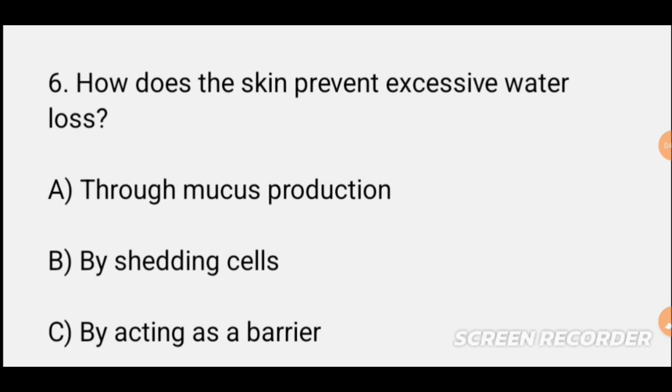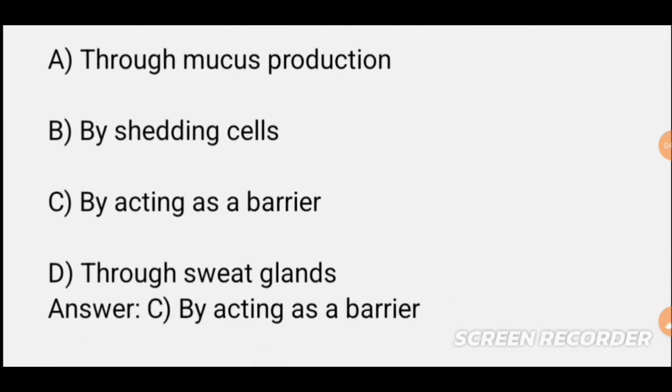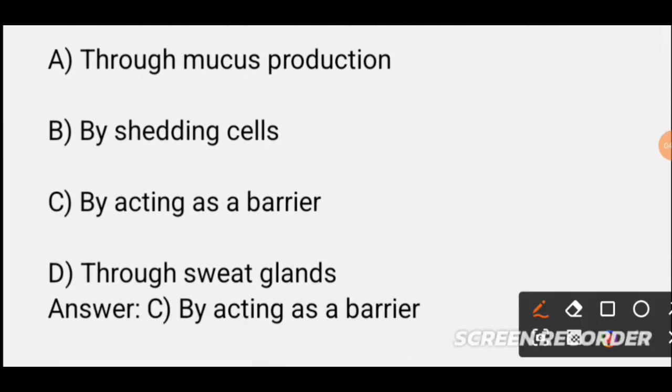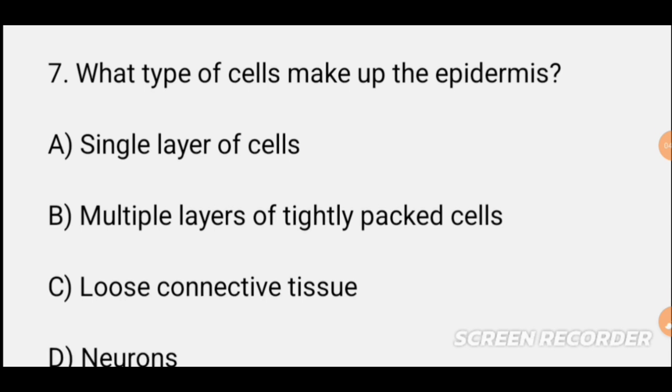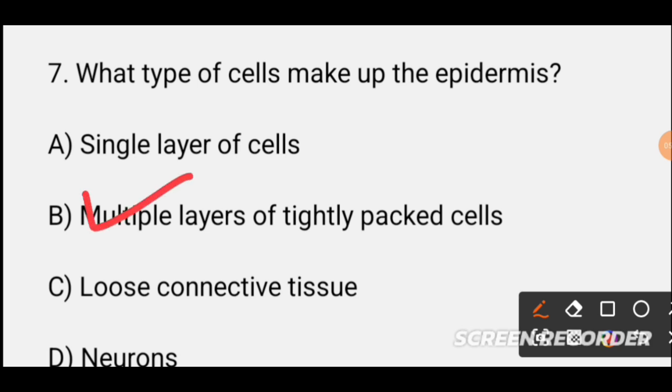MCQ number six: What type of cells make up the epidermis? Options are: a single layer of cells, multiple layers of tightly packed cells, and loose connective tissue neurons. The correct option is B — multiple layers of tightly packed cells make up the epidermis.